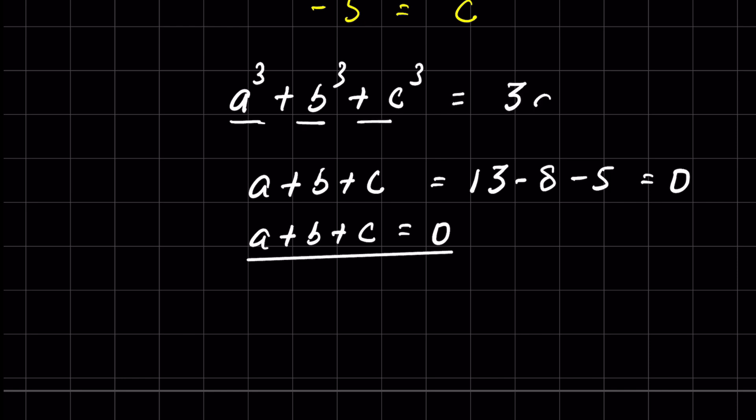3abc. The condition is that a + b + c = 0; it should be equal to 0, then a³ + b³ + c³ = 3abc.